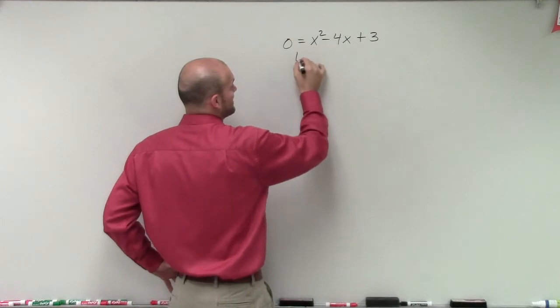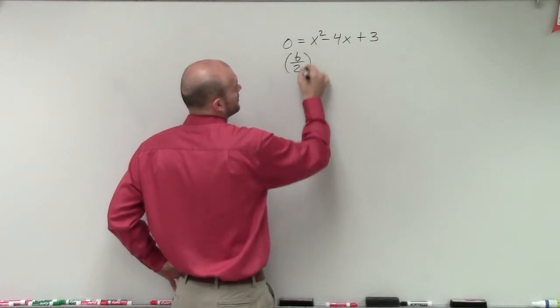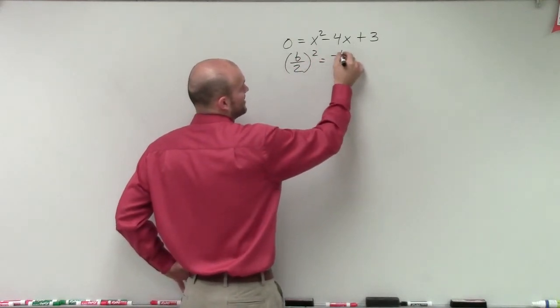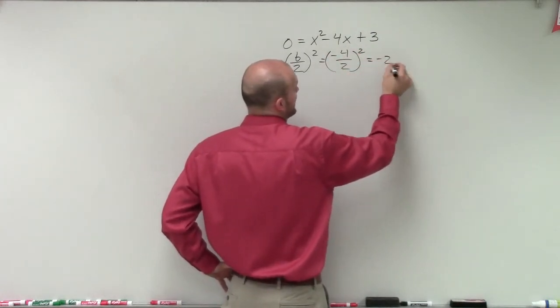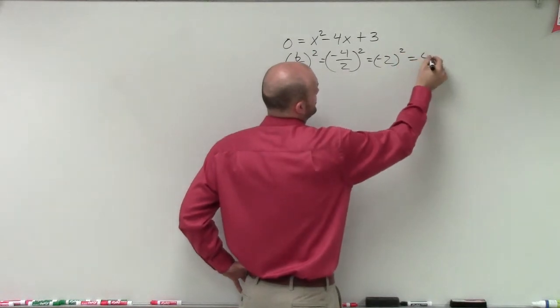Then we take b divided by 2 and square it. In this case, we have negative 4 divided by 2 squared. Negative 4 divided by 2 equals negative 2 squared, which equals 4.